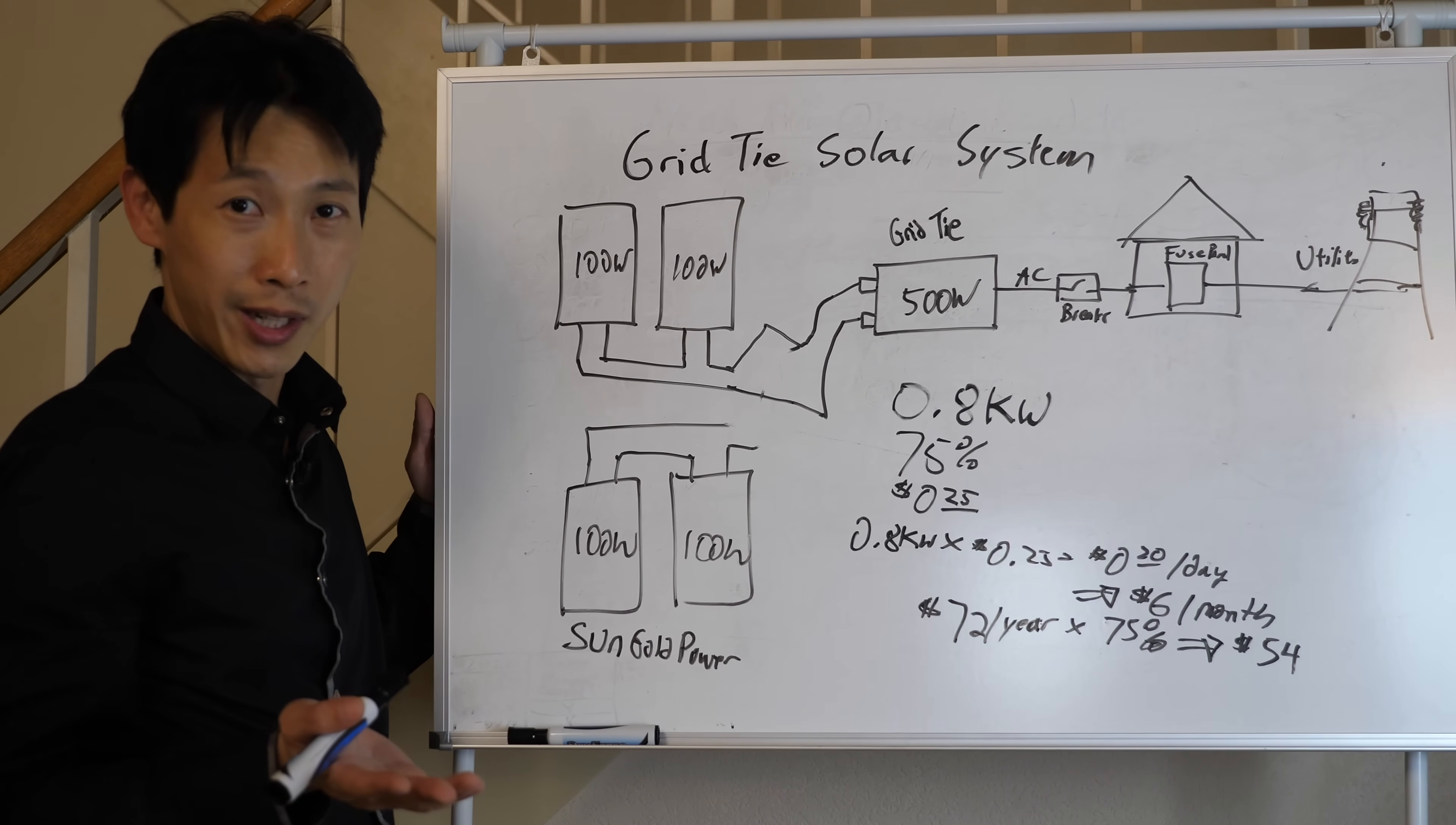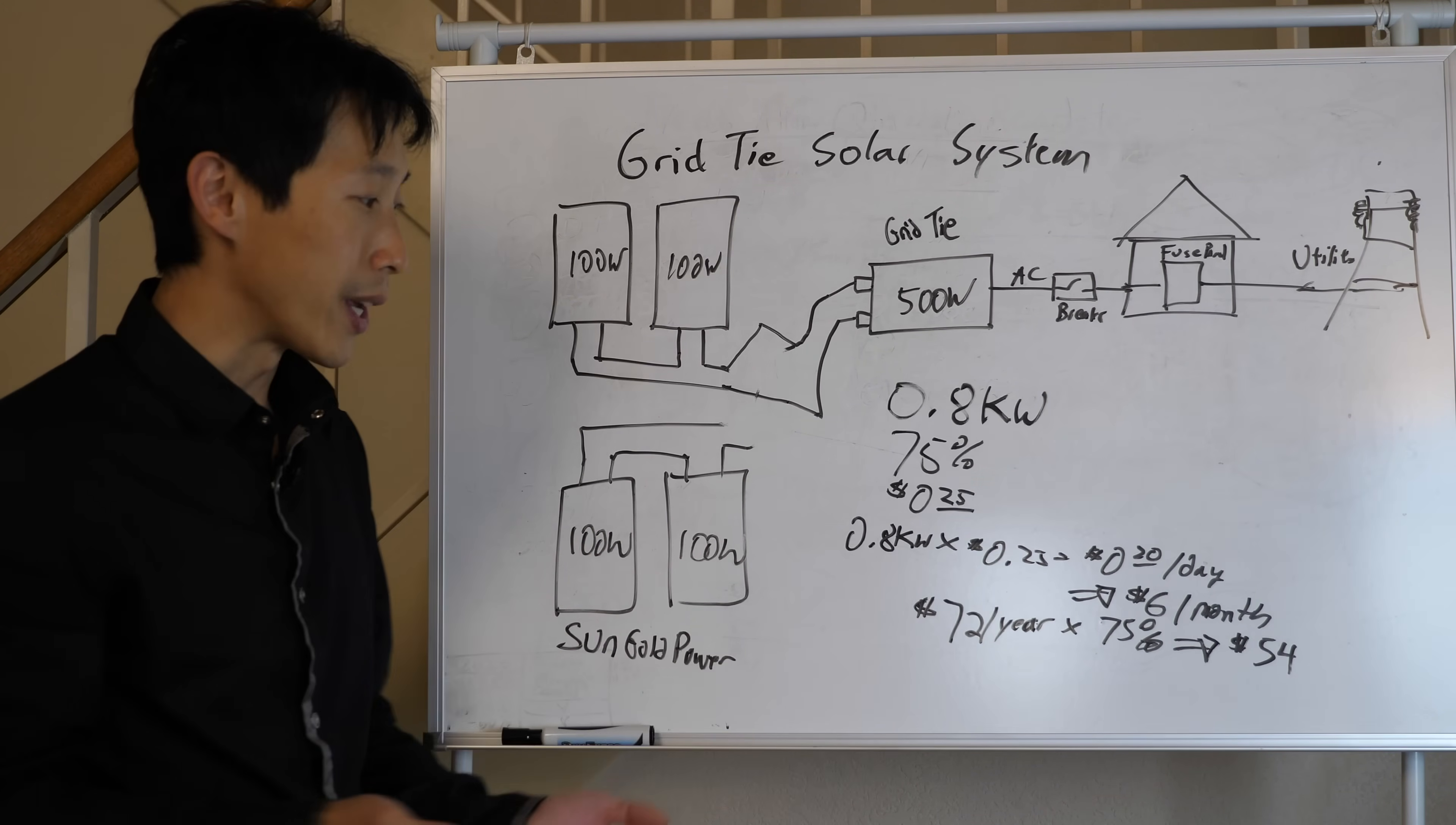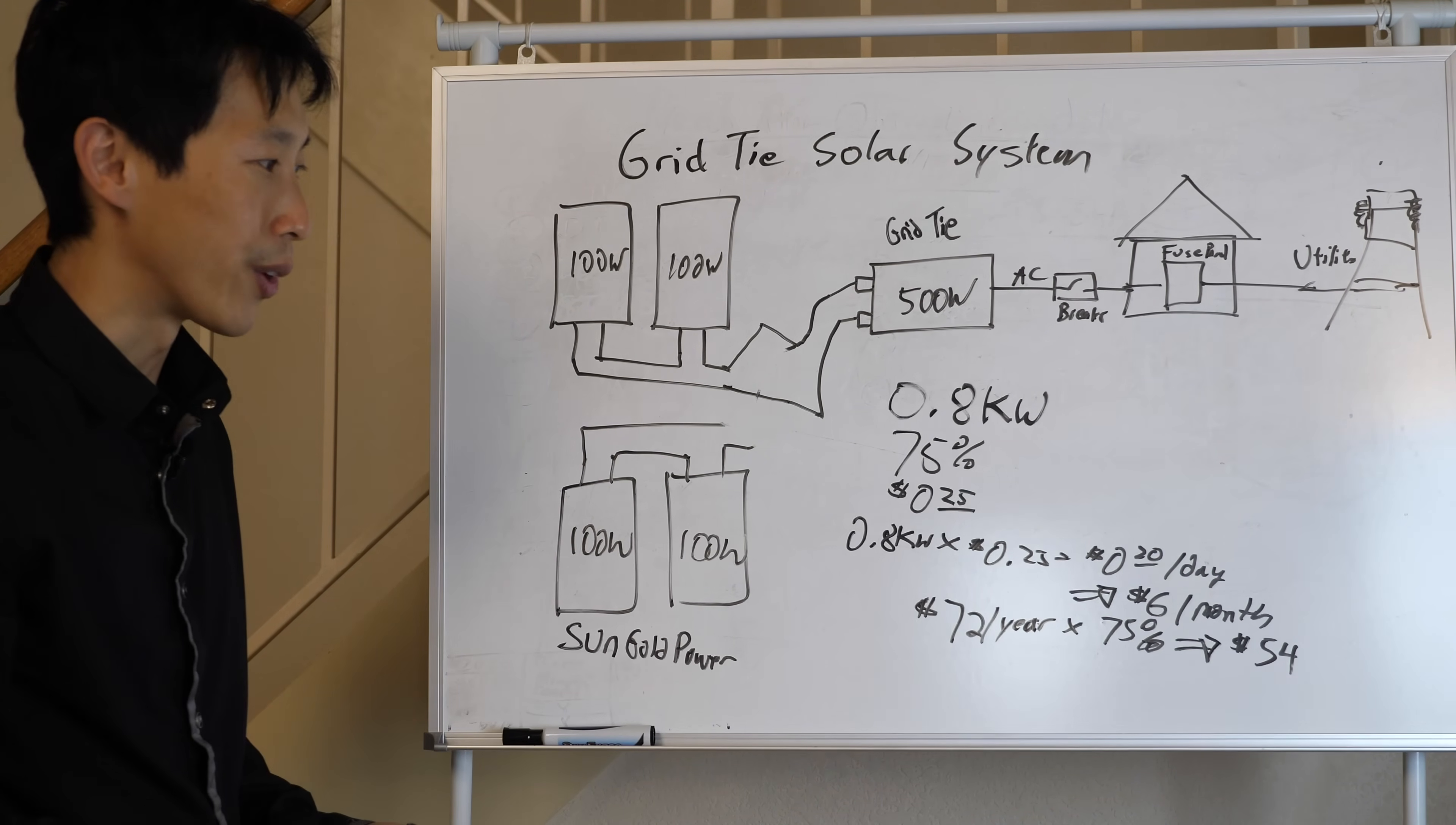It's about 25 cents per kilowatt hour that I have to pay depending on what kind of electricity plan you have with your utility. Now 0.8 kilowatts times 25 cents per kilowatt means I'm going to generate less than one kilowatt. So it's going to be less than 25 cents. So 20 cents a day. This is what this is going to generate. And over a period of 30 days in one month, you're going to get about $6 on a nice sunny summer day. So I'm going to add my fudge factor of 75%. So every year I'm going to get $72 a year without fudge factor. With a fudge factor I'm going to consider about $54.